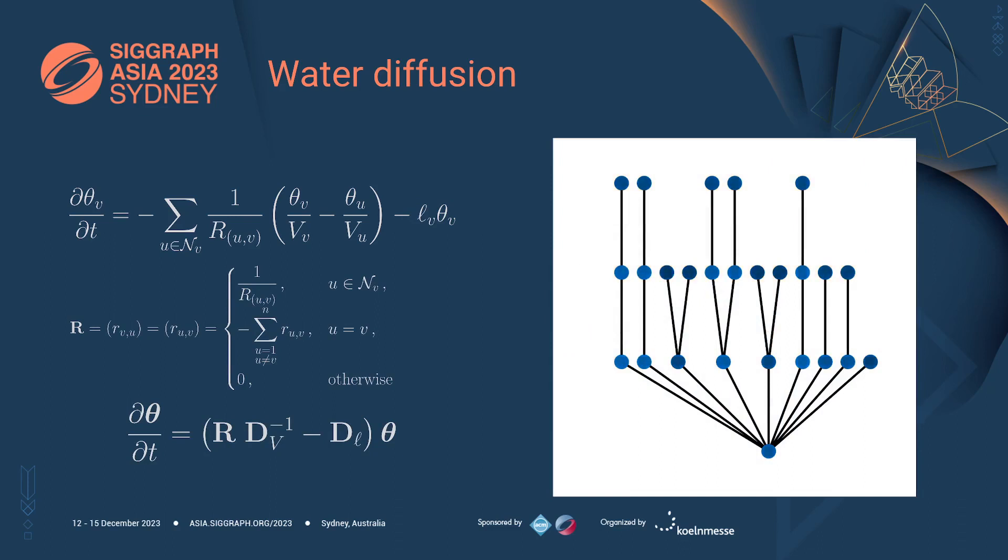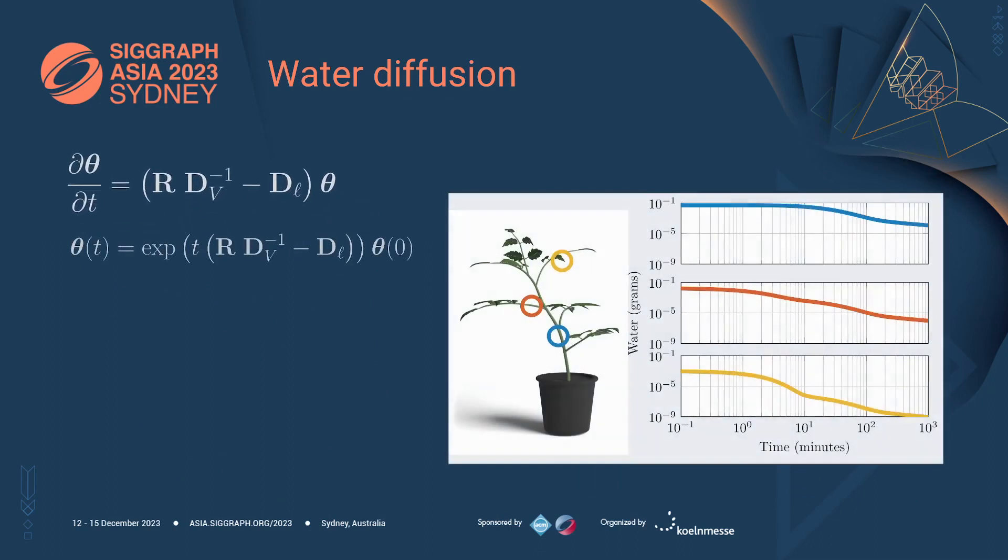So, we started with the problem of modeling the water diffusion process inside a plant, and we transformed it into a diffusion process on a sparse graph. Since the coefficients do not depend on the water content and stay constant over the entire simulation, this equation has a closed form analytic solution.